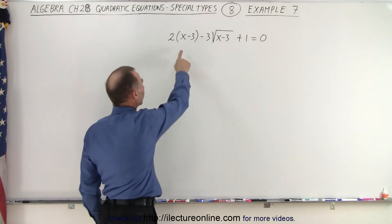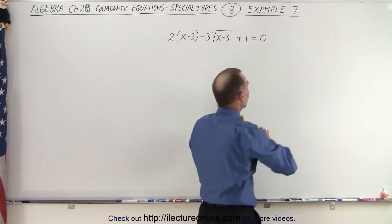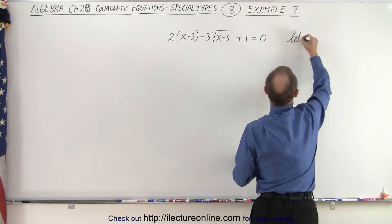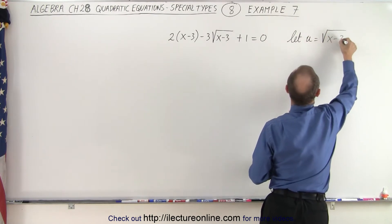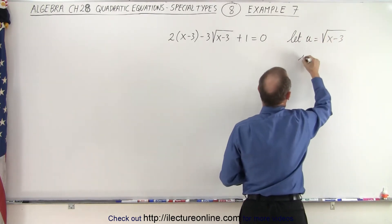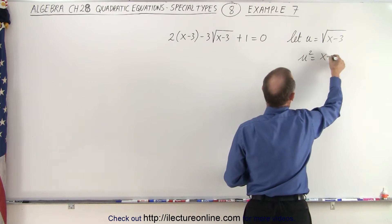Then also we have the x-3 portion. So the best thing to do is to say, let u equal the square root of x-3. And then if we square both sides, we get u squared is equal to x-3.